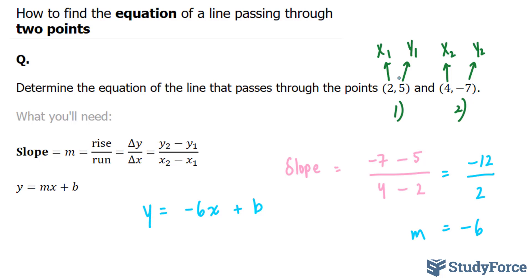So I can replace my x with two and replace my y with five. But once again, if you chose this point, it would have been the same. So let's go ahead and replace this five with that y. I'm going to replace this x with the two, so negative six times two.